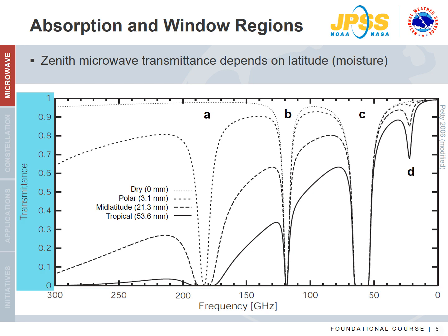Transmittance is shown on the y-axis. From a satellite perspective, a transmittance of 1 represents a transparent atmosphere so that the surface is sensed, while a transmittance of 0 represents the center of a major absorption region and a level higher in the atmosphere is sensed.